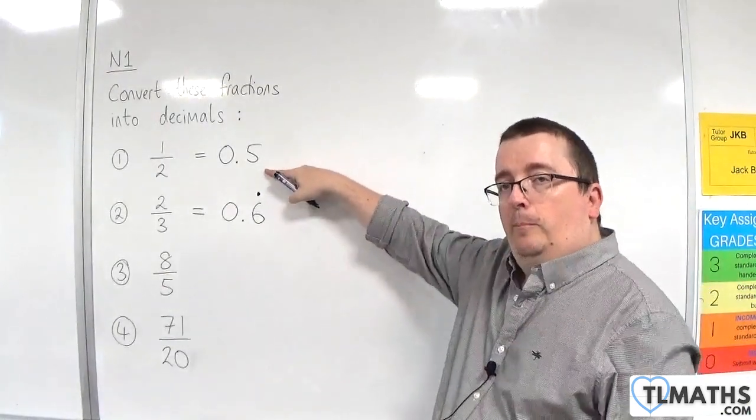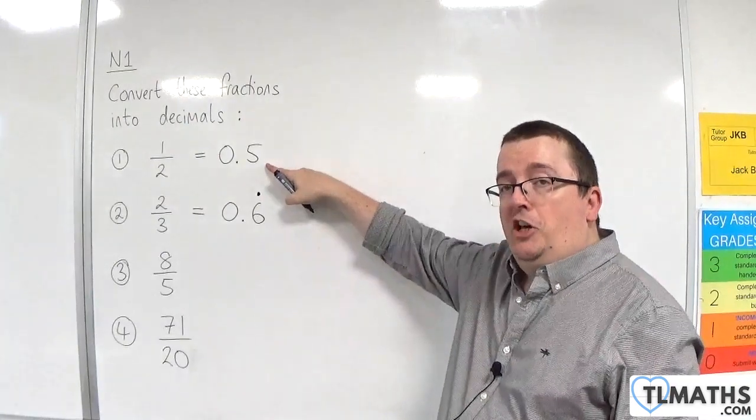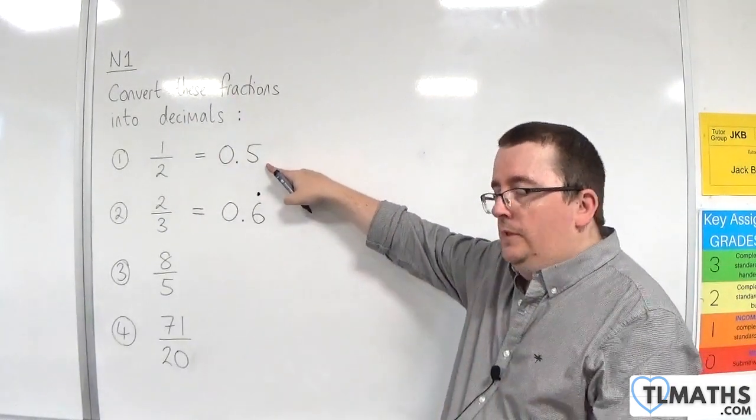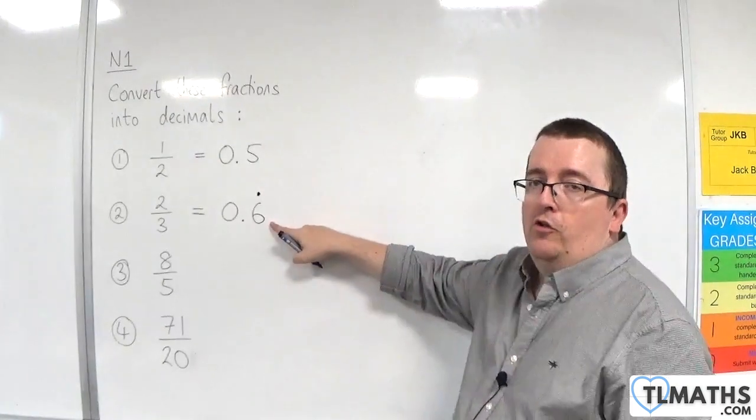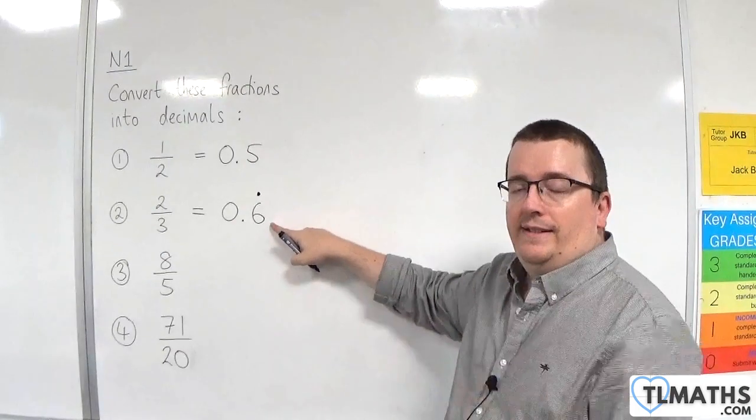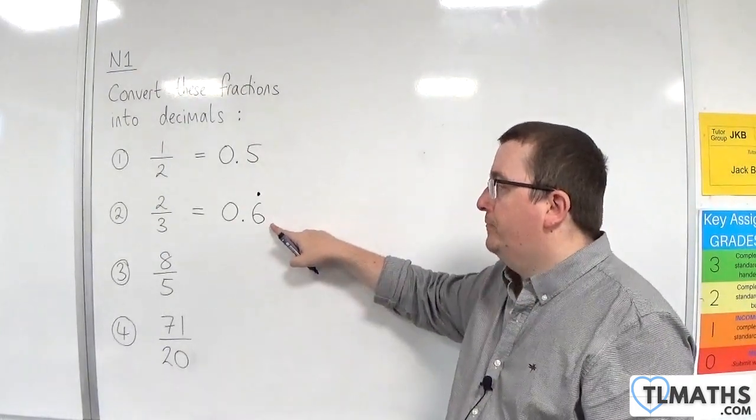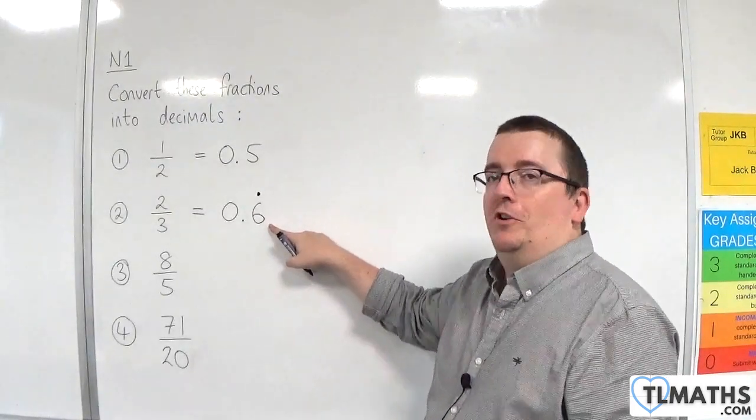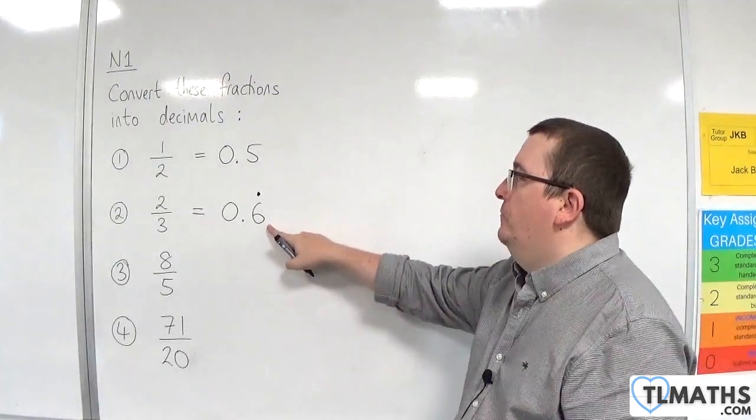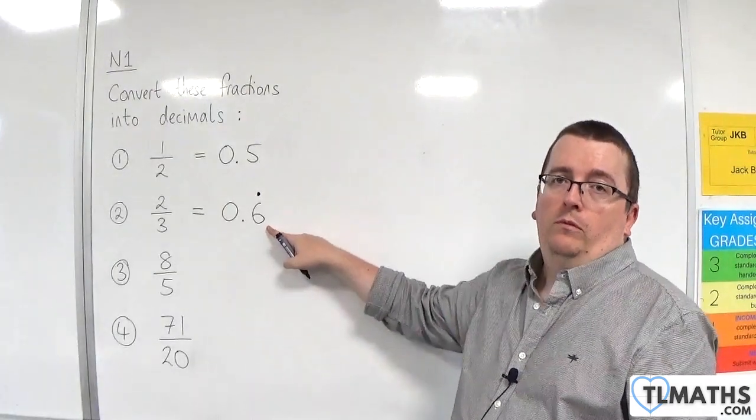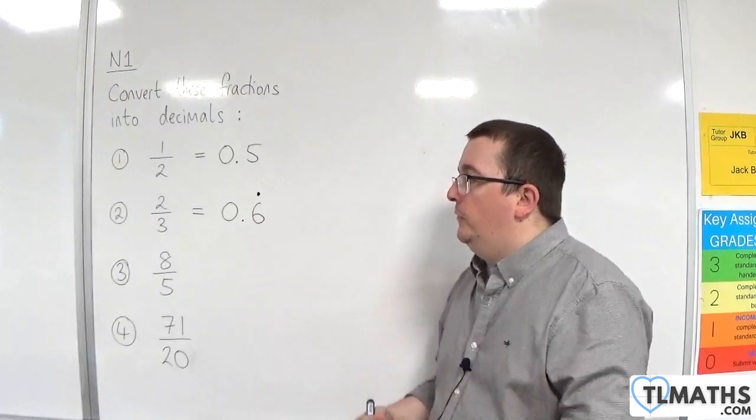This is an example of what we refer to as a terminating decimal, because it terminates, it stops. And this is a recurring decimal, or a non-terminating decimal, really, I should say. Because not all non-terminating decimals are recurring decimals. And examples of that would be pi or root 2, because they don't repeat themselves.